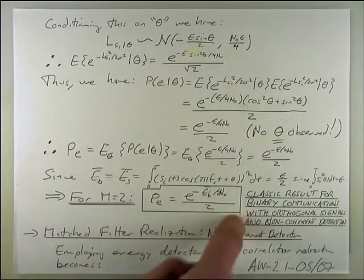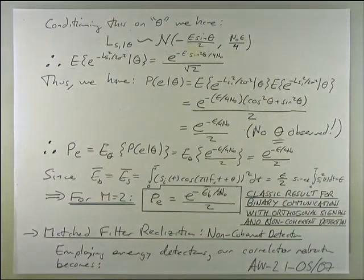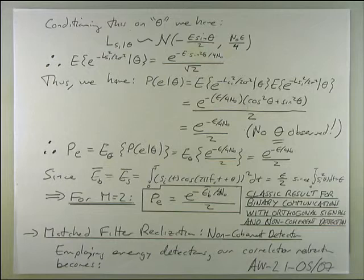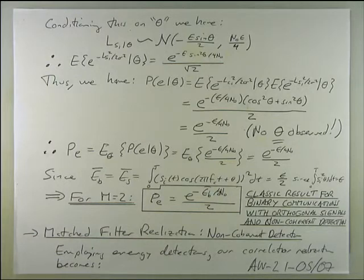This is the answer — the probability of error. Recall that for coherent detection with orthogonal signaling we got something like Q(√(d_min²/(2N₀))). For non-coherent detection with orthogonal signaling, this is your answer: no Q function, a beautiful exponential form.